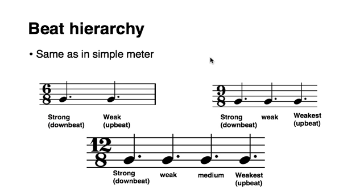Beat hierarchy in compound meters is the same as in simple meters. 6/8 being duple features a simple alternation of downbeats and upbeats. 9/8 being triple meter has a strong downbeat and two successively weaker beats. And 12/8 has the same beat hierarchy as 4/4: strong, weak, medium or semistrong, and then the weakest being the upbeat.